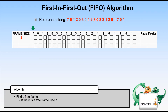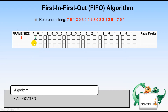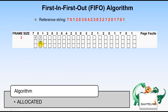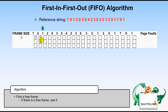Initially, everything is a free frame. Considering frame size of 3, the first thing to do is allocate 7. Since the frame is empty, we just plot 7. Next, allocate 0 — since there is a free frame, we use it. Then allocate 1 — again there is still a free frame, so we use it.